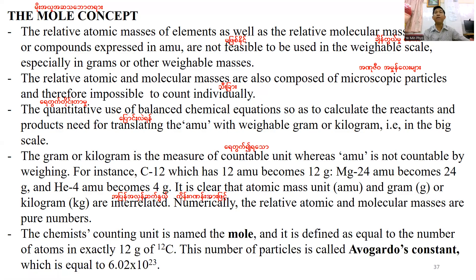The mole is defined such that the number of atoms is equal to Avogadro's number. In this case, if you have 12 grams of carbon, you have one mole of carbon. This number of particles is called the Avogadro constant.